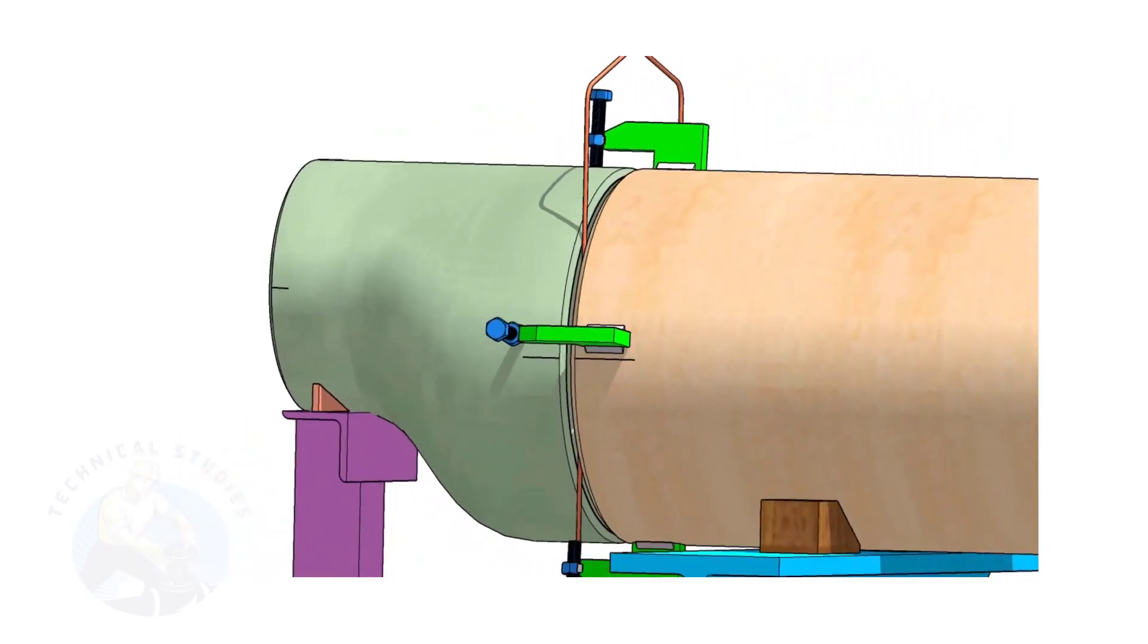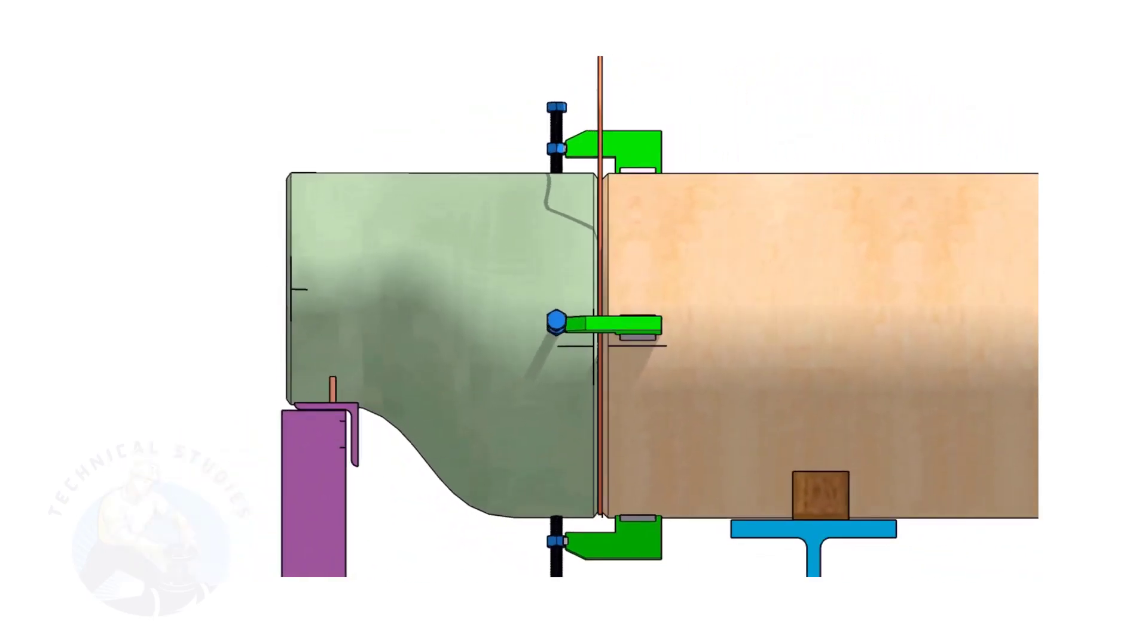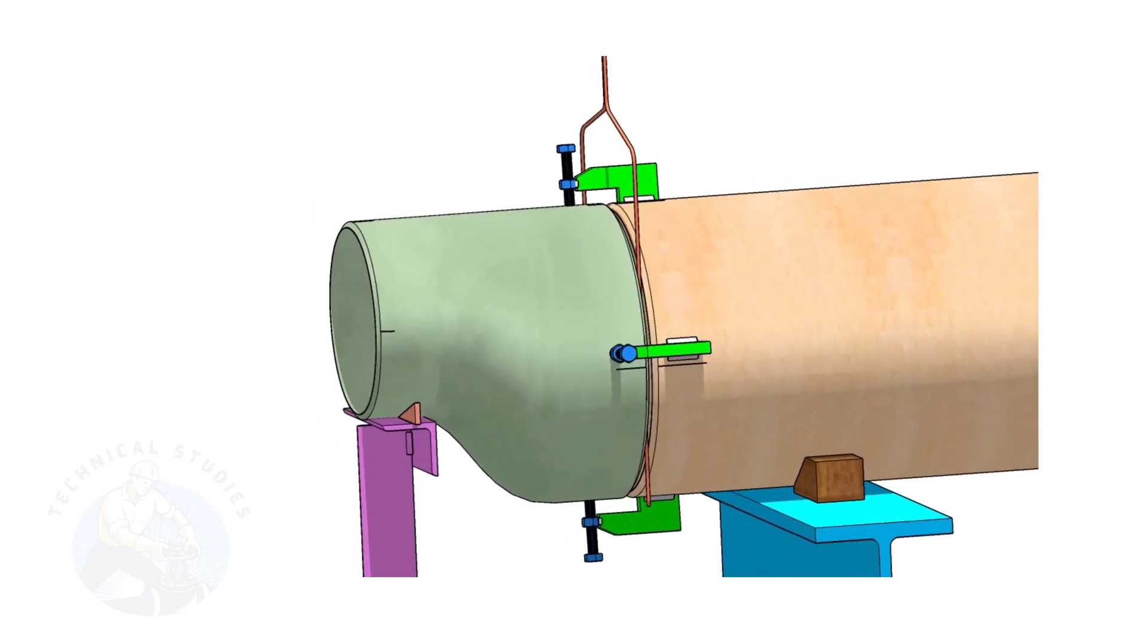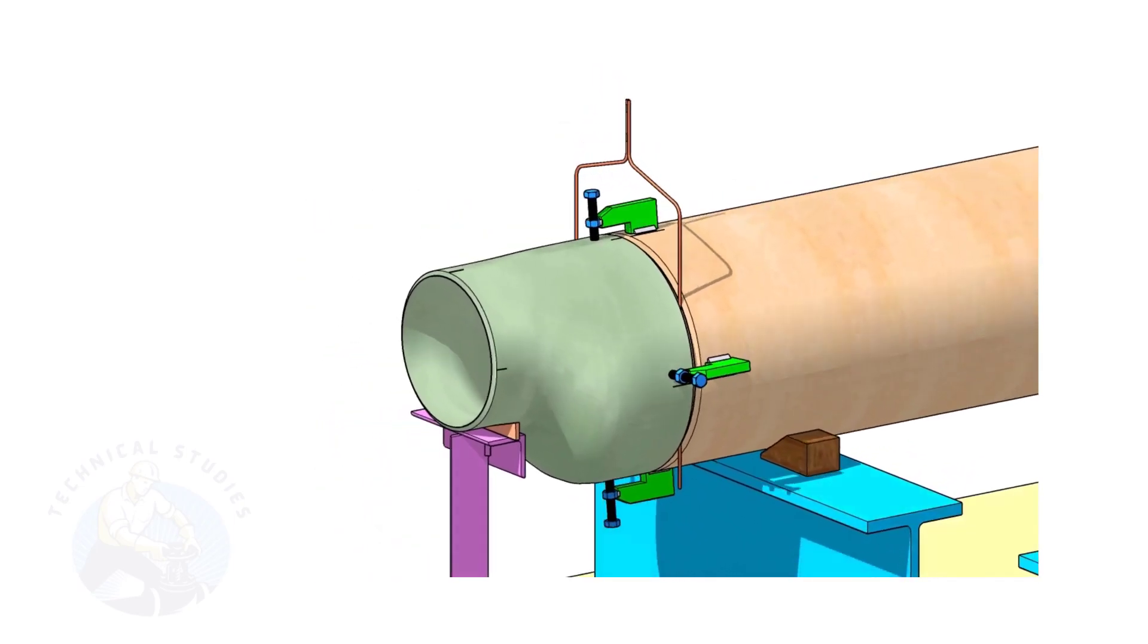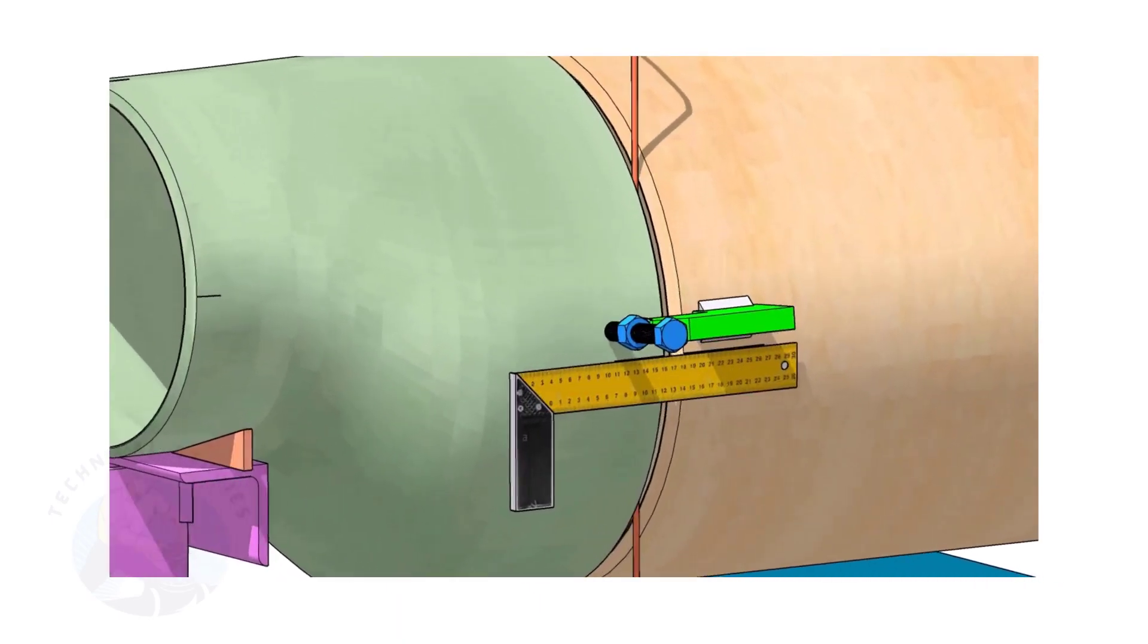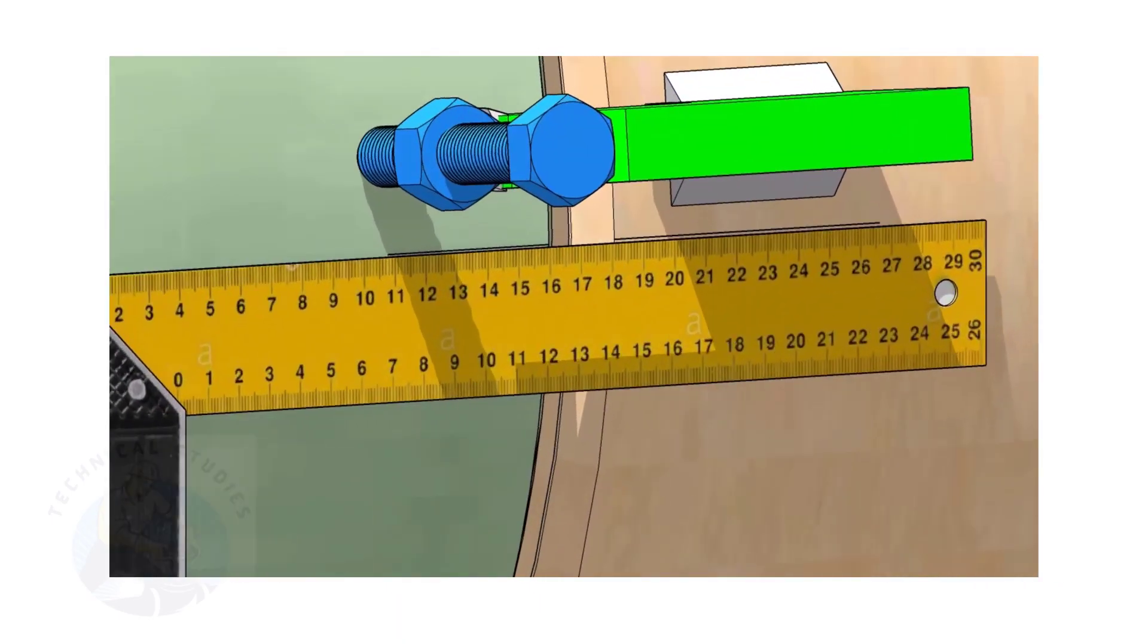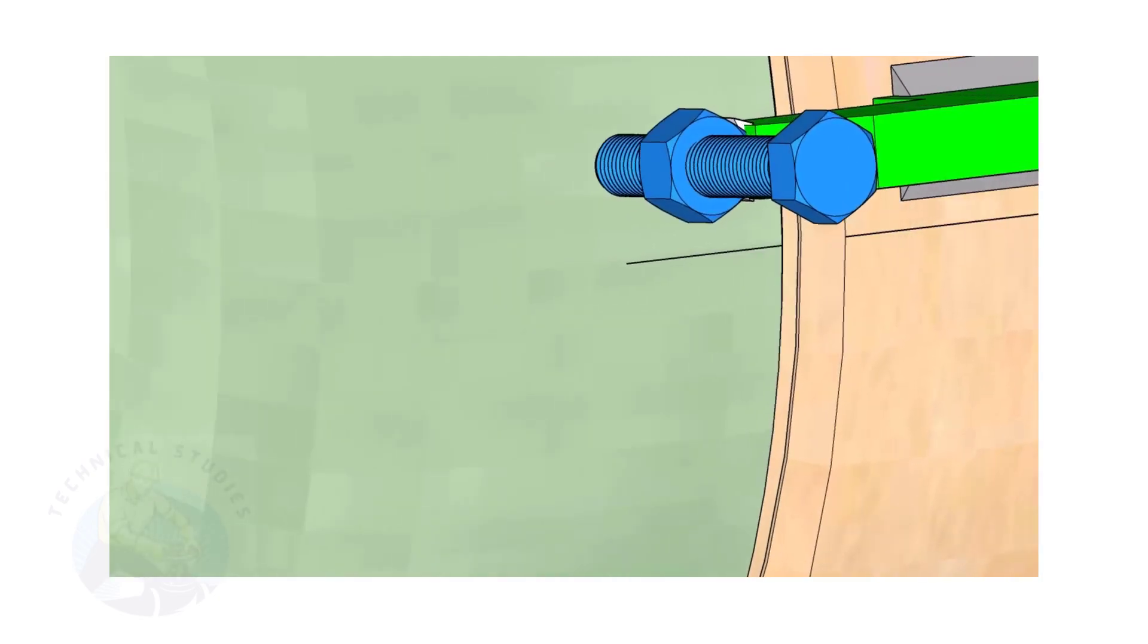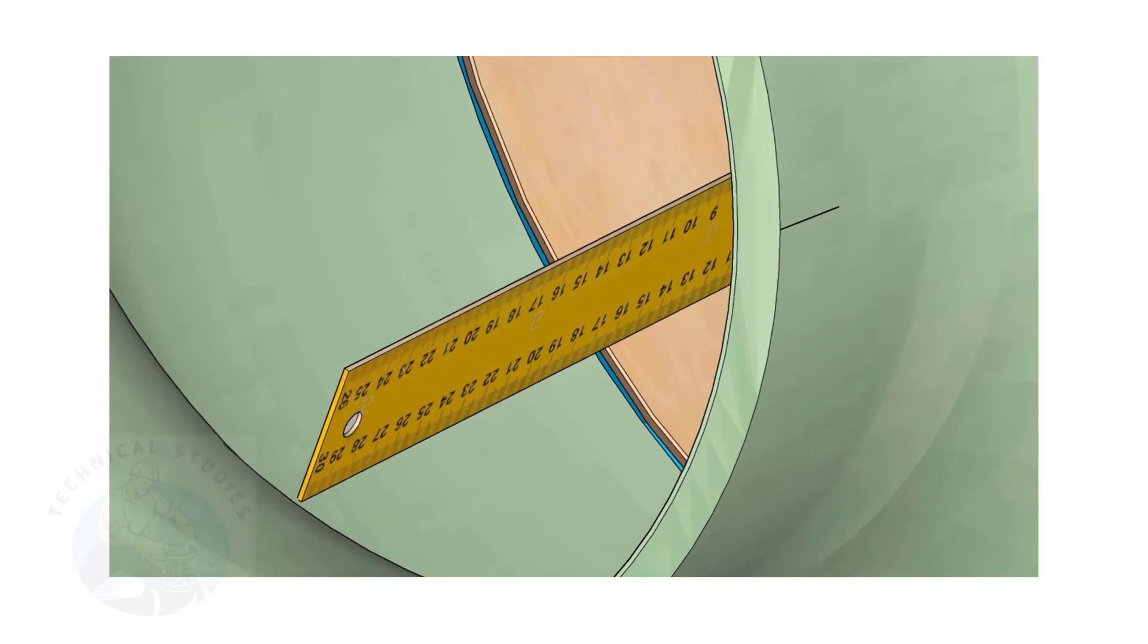Match the center lines on the pipe and on the reducer. By adjusting the jack bolts, correct the overlap of the joint inside the pipe.